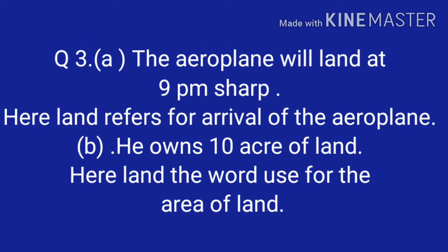Question number three: A — 'The aeroplane will land at 9 pm sharp.' Here 'land' refers to the arrival of the aeroplane. B — 'He owns 10 acres of land.' Here 'land' is the word used for an area of ground.